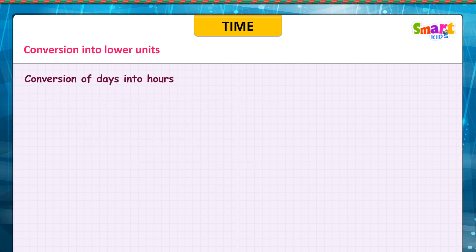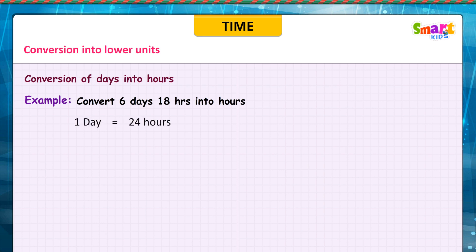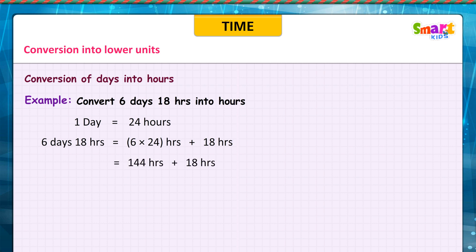Conversion of days: 6 days 18 hours. 1 day is equal to 24 hours. 6 days 18 hours is equal to 6 × 24 hours plus 18 hours, which is equal to 144 hours plus 18 hours, which is equal to 162 hours.